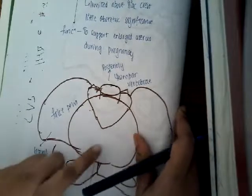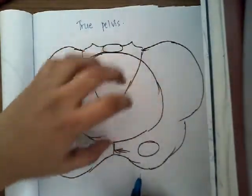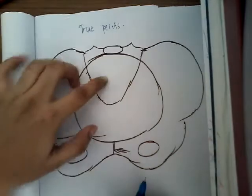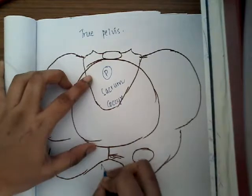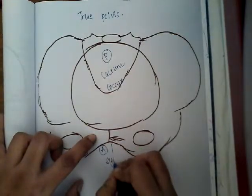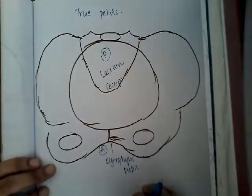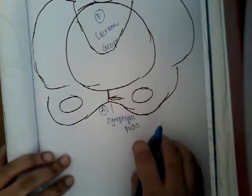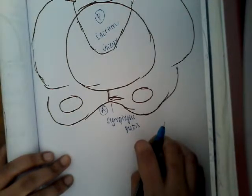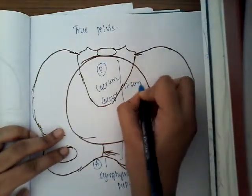The true pelvis is below the pelvic brim. The boundaries of the true pelvis are: posteriorly you see the sacrum and coccyx, and anteriorly you see the symphysis pubis and the pubic bone. This is the true pelvis where the baby has to pass. In the front it measures 4 cm deep, and in the back it measures 11.5 cm deep.